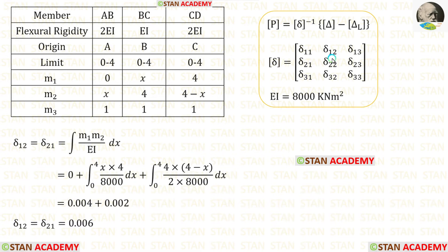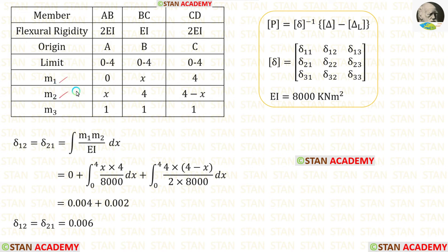Now let us find δ₁₂ and δ₂₁. The formula is ∫M1·M2/EI dx. Applying the values of M1 and M2, integrating, and adding the results gives δ₁₂ = δ₂₁.